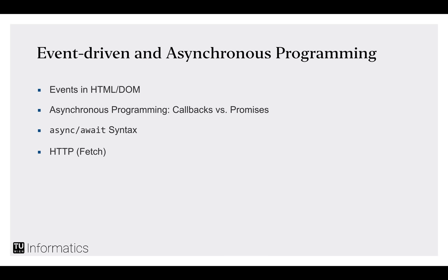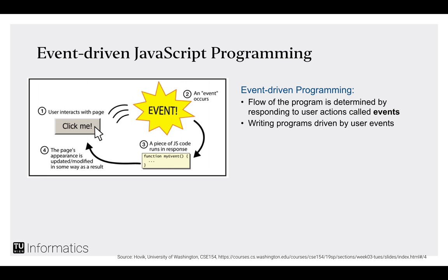Now we come to the last part of the lecture: event-driven and asynchronous programming. Event-driven programming means the flow of the program is determined by responding to events that happen from a user perspective. Every time a user does something on the page, JavaScript can react to those events. This means there's no traditional main function — what you're actually doing in most cases is reacting to the load event of the page as it loads.